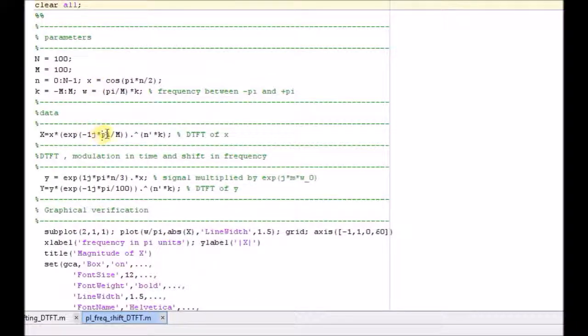This is the MATLAB code for verifying the shifting property. We can clearly see these are the parameters for this program, where n is the length of the time vector and m is the length of the frequency vector, and x is cos of pi n by 2, which is our signal. Then k and w form the DTFT matrix support, and x is the DTFT of the original signal x.